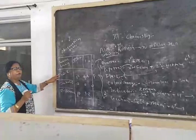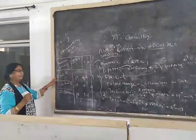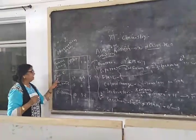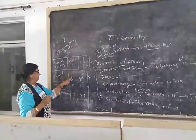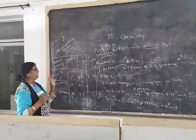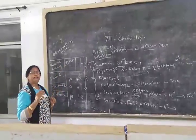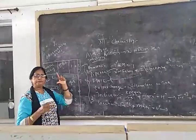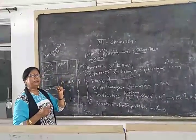So now in burette reading, you have to write again 3 columns: final reading, initial reading and difference. Final reading should be whole number in the burette. Initial reading you are taking zero reading. In burette you are getting up to zero reading.